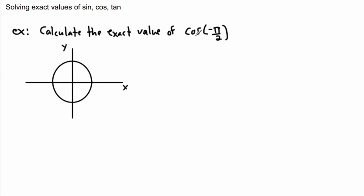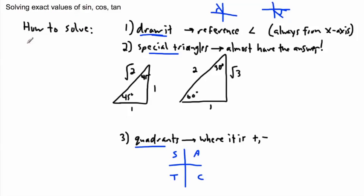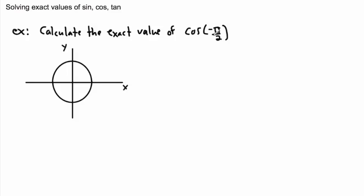Let's calculate the exact value of cos of negative π over 2. I'll start nice and easy just to show how to do this. Step 1 — we draw an angle of negative π over 2. This is 0 and 2π here, and π is over here. Negative means going downwards, and π over 2 is halfway between here and here, so it must be straight down. This is one of the easy ones — a multiple of π over 2.